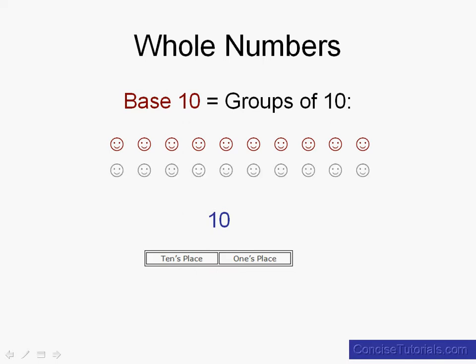Let's see what happens when there is more to count. We add another line of happy faces and start counting through those: 11, 12, 13, 14, 15, 16, 17, 18, 19, and 20. Now we have a two in the tens place, meaning we have counted completely through two groups of 10, and a zero in the ones place meaning that after counting through two groups of 10 there were no more to count.